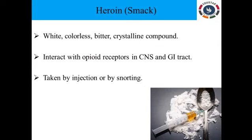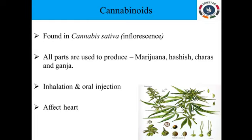Opioids are colorless, white, bitter-tasting crystalline compounds. They interact mainly with opioid receptors on nerve cells in the body and the brain. Opioids act as a depressant and slow the body functions. They are mainly present in the central nervous system as well as the gastrointestinal tract. These drugs can be taken by means of injection or by snorting — snorting means through the nose. Heroin is also commonly called smack.